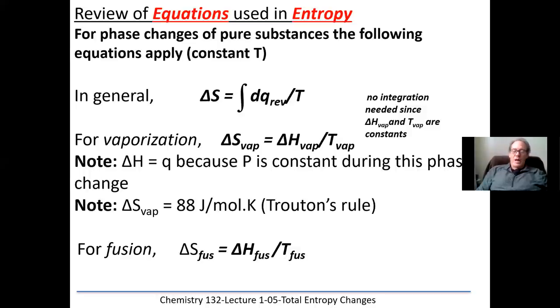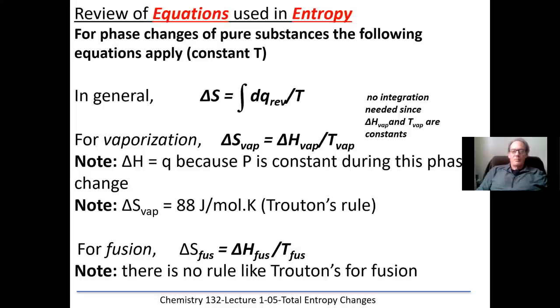When substances turn from solids to liquids — they are melting — we find the entropy change by taking the heat of fusion, which is a given quantity, divided by the temperature at which that fusion occurs. For instance, ice melts at zero degrees Celsius or 273 Kelvin. These phase changes, for both fusions and vaporizations, are always at constant temperatures.